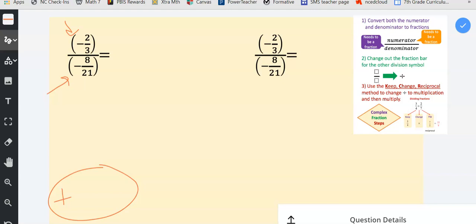Now that we've decided that, I can go ahead and complete step one. Step one says convert both the numerator and denominator to fractions. When I look at the numerator, it's already a fraction. I look at the denominator, it's already a fraction, so we didn't really have to do step one.